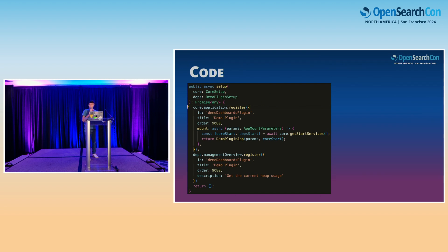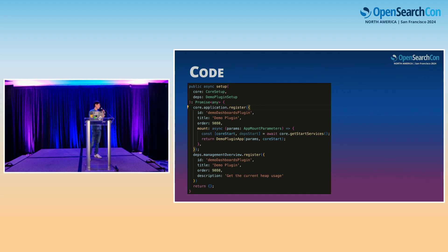The mount function is used to actually render your UI when the user navigates to it. Here we use core setup's get start services to asynchronously load in the start dependencies. The next block uses the management overview plugin dependency declared in our manifest file to register our plugin with the management overview plugin.